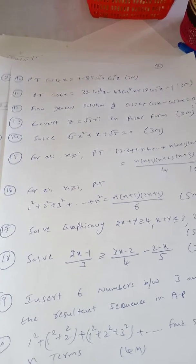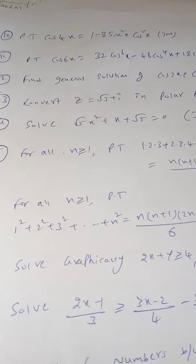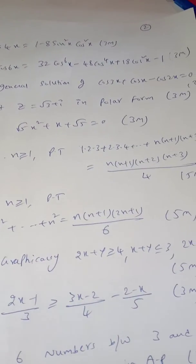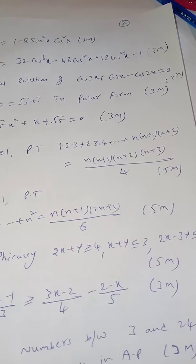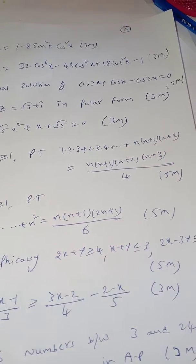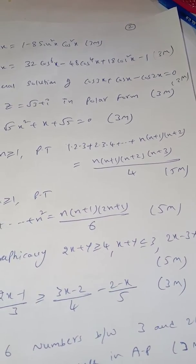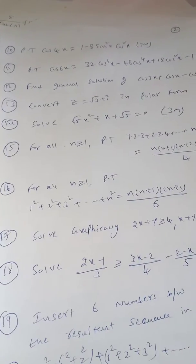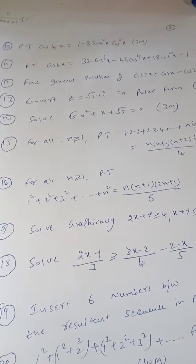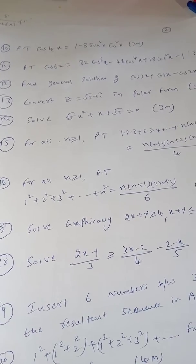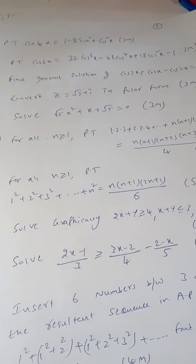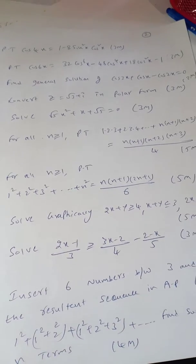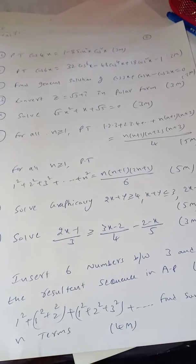Question number 15, for all n greater than or equal to 1, prove that 1 into 2 into 3 plus 2 into 3 into 4 plus and so on plus n into n plus 1 into n plus 2 is equal to n into n plus 1 into n plus 2 into n plus 3 by 4. It is a 5 mark question in mathematical induction. Question number 16, for all n greater than or equal to 1, prove that 1 square plus 2 square plus 3 square plus and so on plus n square equal to n into n plus 1 into 2n plus 1 by 6. It is also a 5 mark question in mathematical induction.